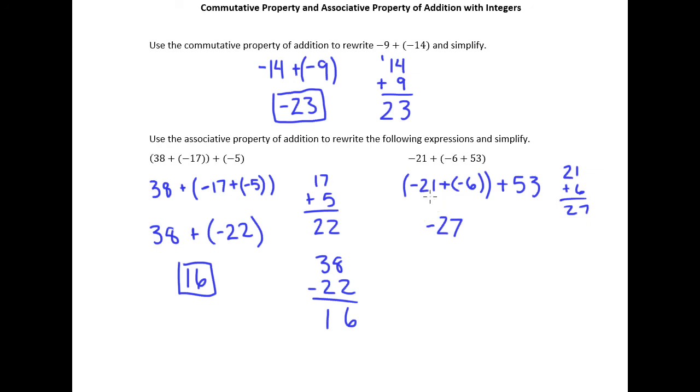Now that I've added them, I really don't need any of those parentheses anymore, so we'll rewrite it like this: -27 plus 53. And just like in the last example, we're subtracting and we'll end up with a positive answer because the larger absolute value comes from the positive number.